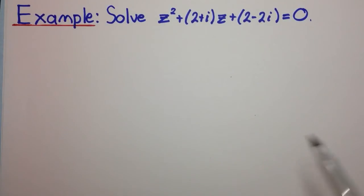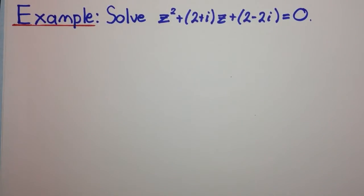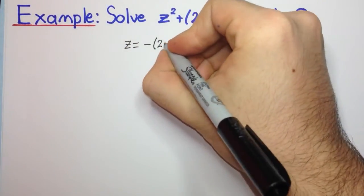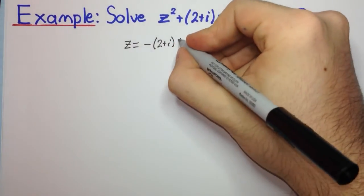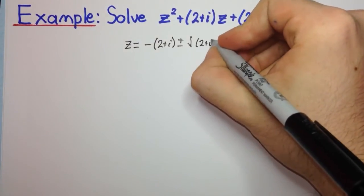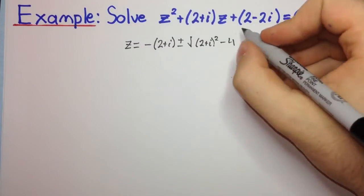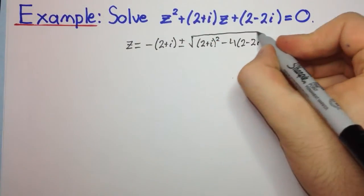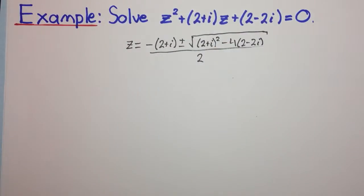The question says: solve z² + (2 + i)z + (2 - 2i) = 0. The way we do this is by simply using the quadratic formula, as for a real quadratic equation with real coefficients. So we have z equals minus b, which is minus(2 + i), plus or minus the square root of b², which is (2 + i)², minus 4 times a, which is 1, times c, which is (2 - 2i), all over 2 times 1, which is 2.